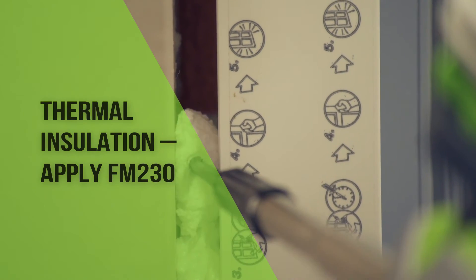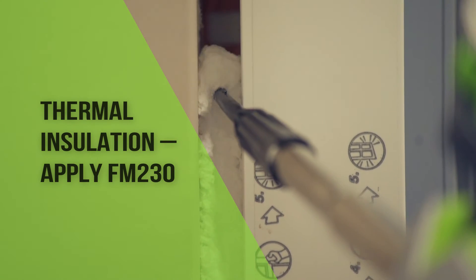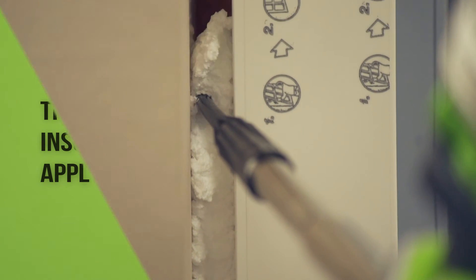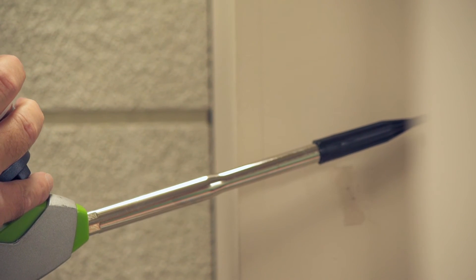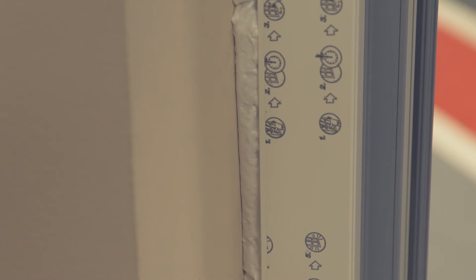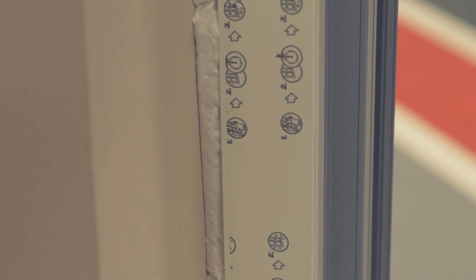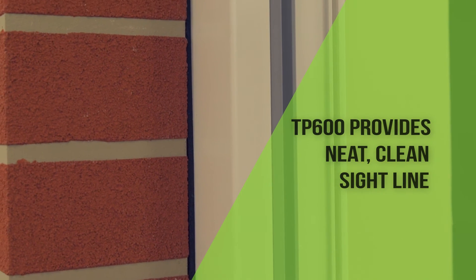Ilbrook FM230 ProFoam window PU foam is then applied into the perimeter joint to provide thermal insulation. A special nozzle is available and useful for application into narrow joints. The frame is now sealed to the outside and thermally insulated.